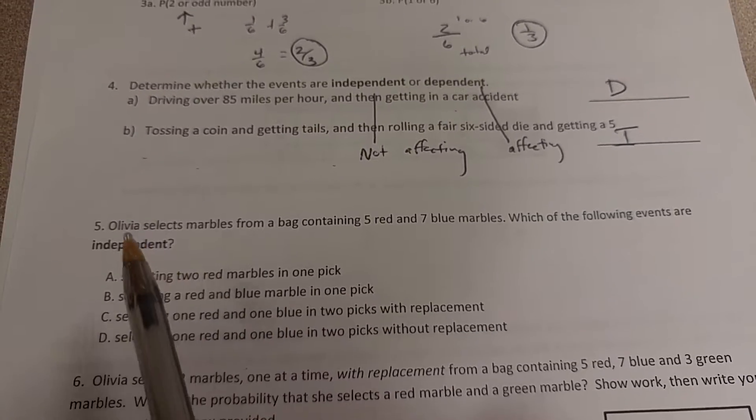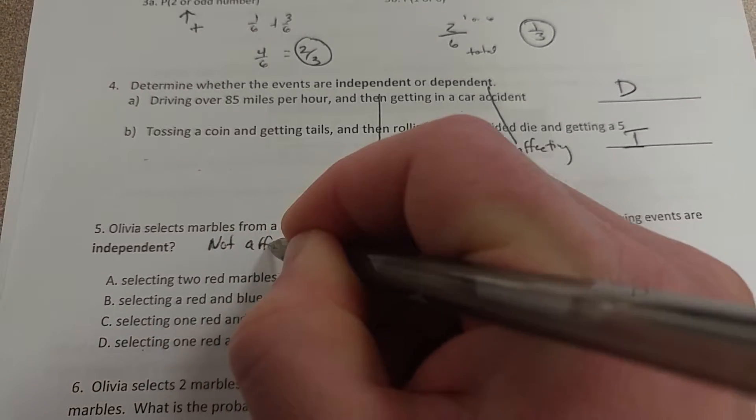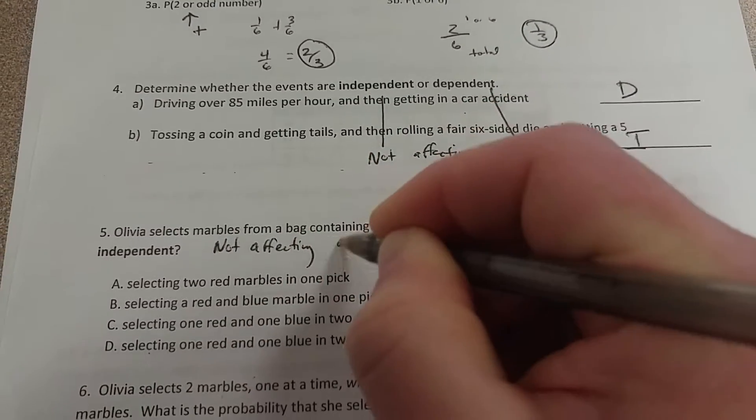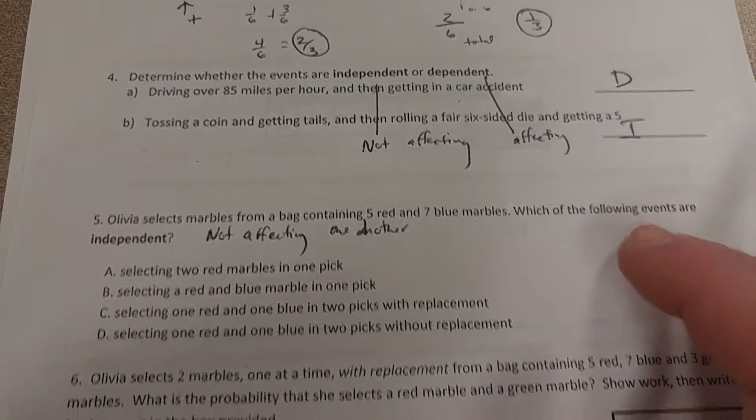Number four, remember the definition of independent events are things that are not affecting one another. So you're not affecting the total of something, or you're not affecting the likelihood of something else to happen.